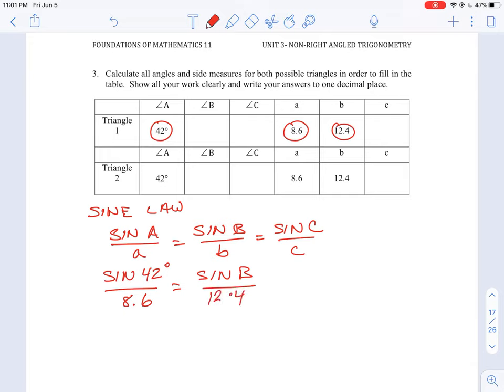So we'll just do a simple cross multiply here. Actually, what we want to do here is isolate sine B. So we don't really need to cross multiply the 8.6 because we're going to end up dividing it back. But if we did it like the way we've done other questions, we're going to have 12.4 times sine of 42 is equal to 8.6 times sine of B.